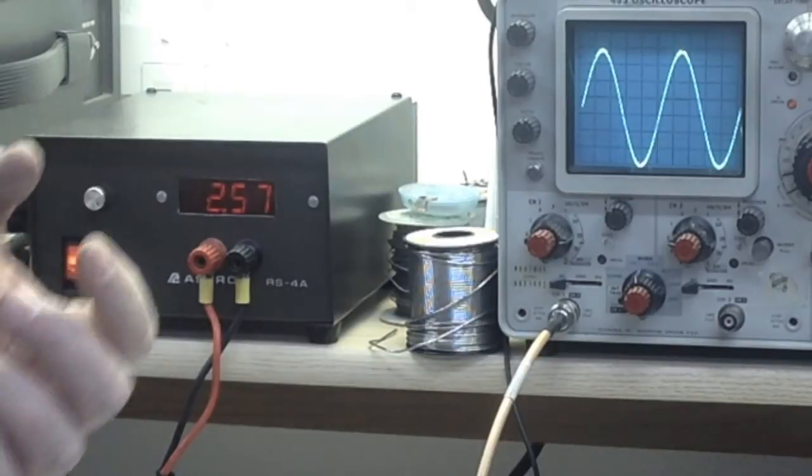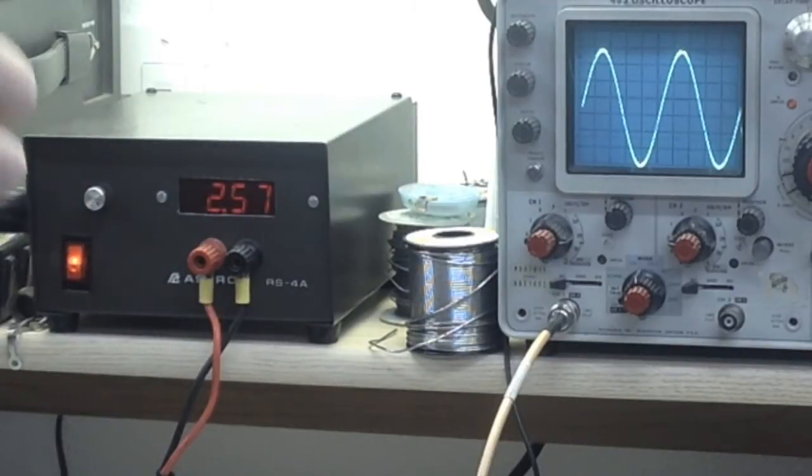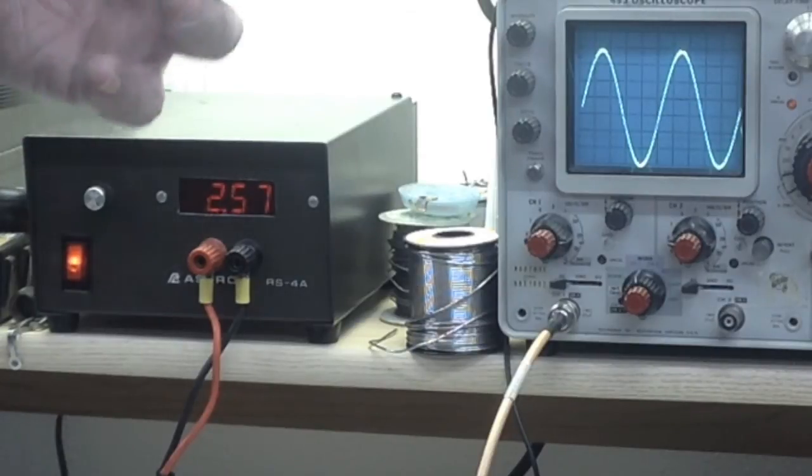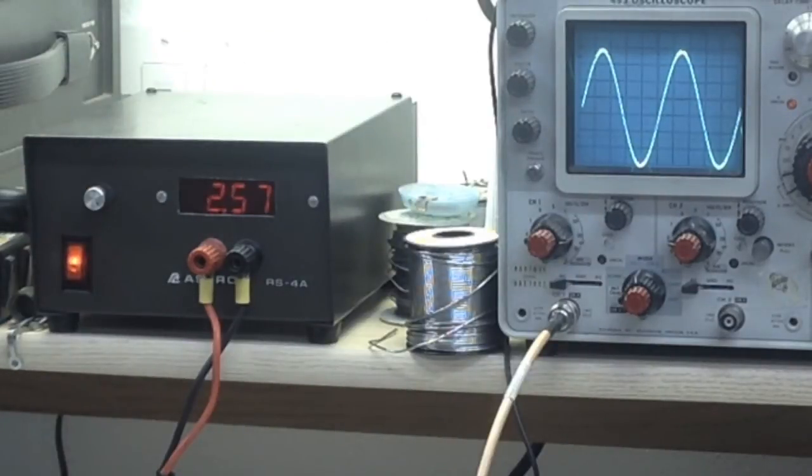An FM modulator changes the frequency of the carrier as the modulation changes to impress the information onto the signal so we can receive a voice or transmit data.